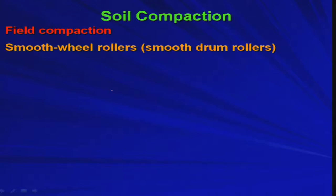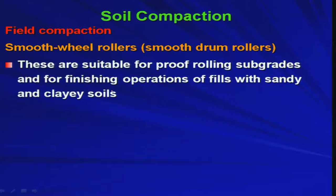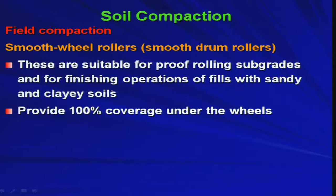Coming to field compaction: the different types of rollers generally seen in the field. The first is smooth wheel rollers, also known as smooth drum rollers. These are suitable for proof rolling subgrades and for finishing operations on fields with sandy and clayey soils. They provide 100 percent coverage under the wheels — because of the complete cylindrical drum wheel, you get 100 percent coverage.